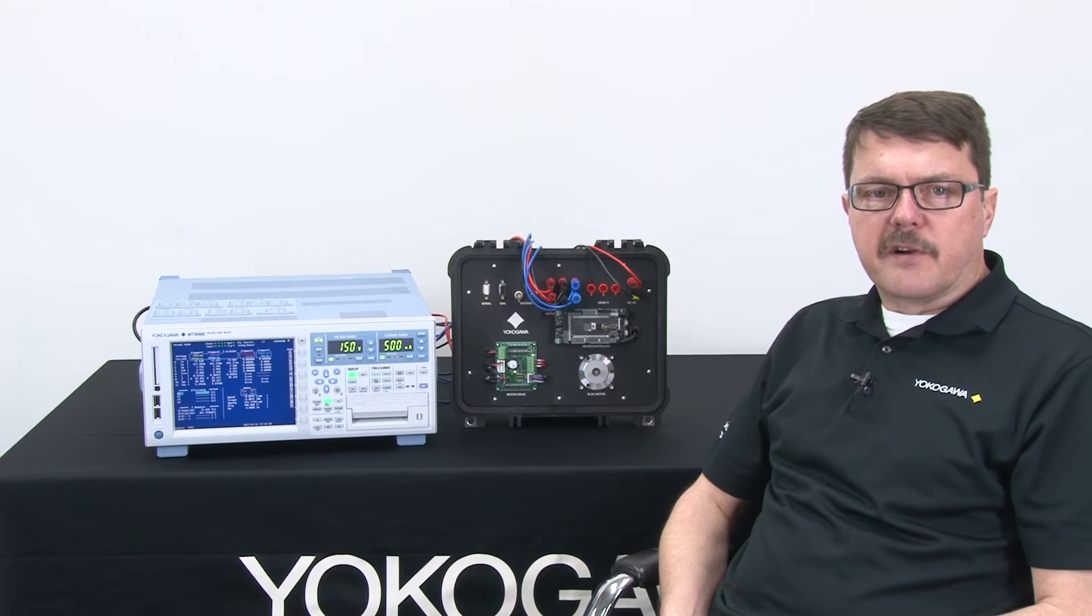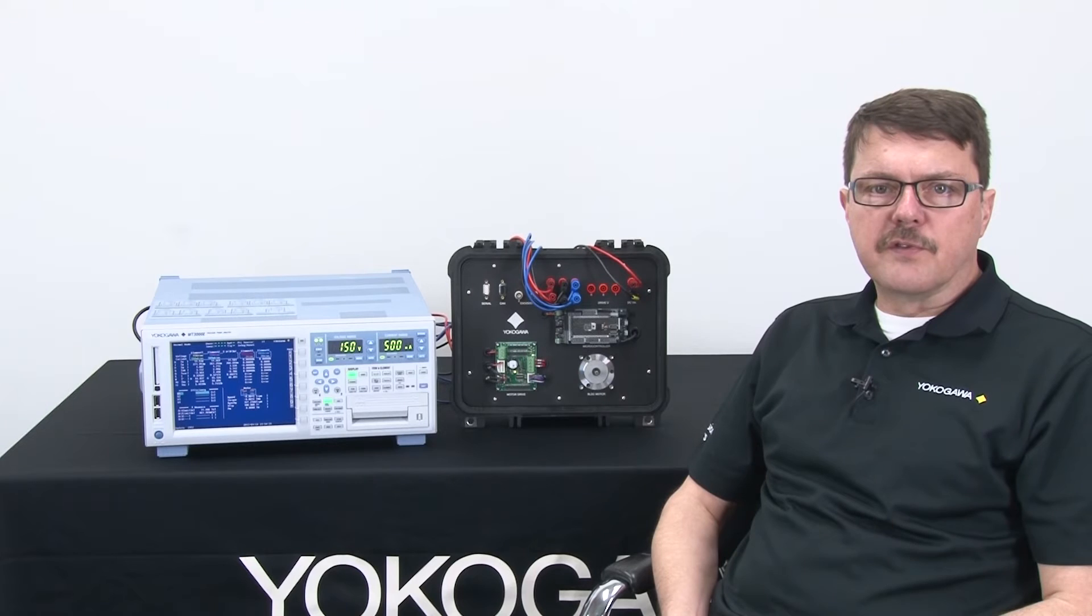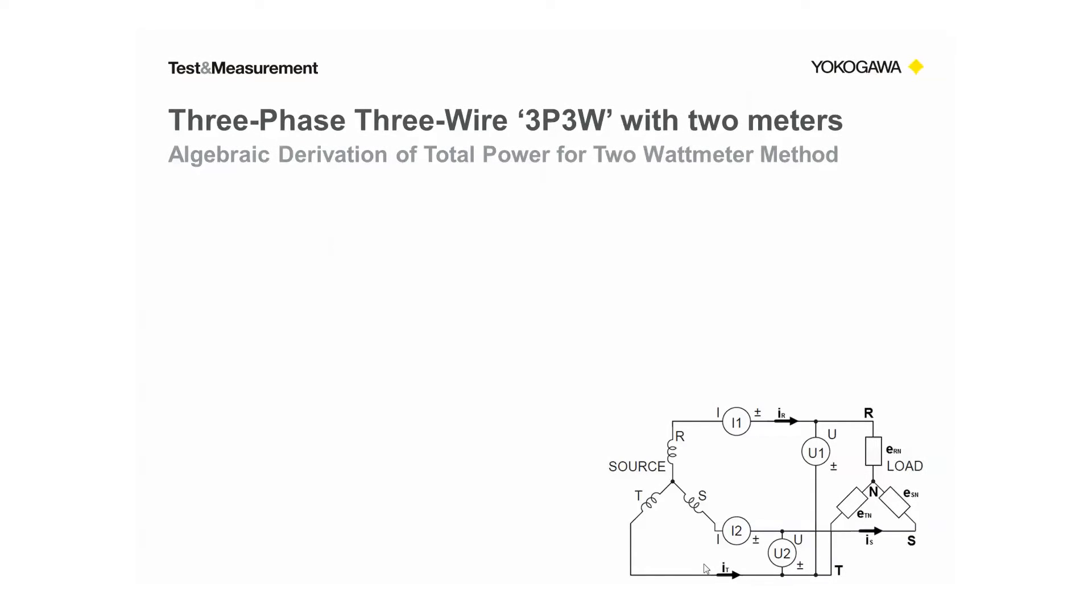Okay, let's look at the algebraic derivation for the total power when using the two wattmeter method. So in equation A here, I've written total power in terms of internal voltages such as ERN, ESN, ETN.